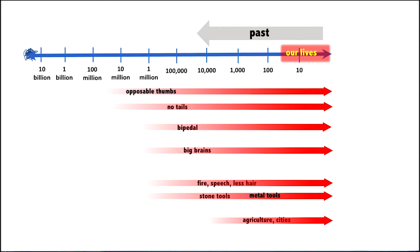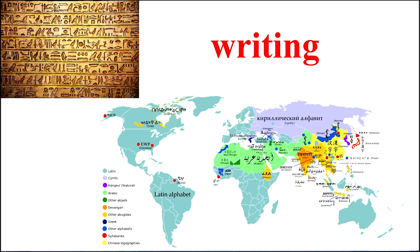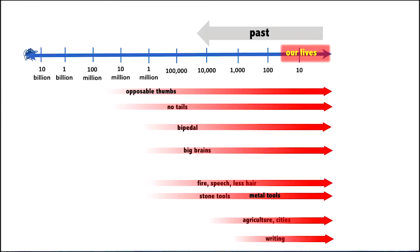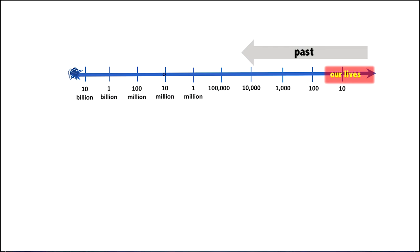Also writing, that's something that's really recent. Here's the distribution of alphabets around the world: the Latin alphabet, Arabic, Cyrillic spoken in Russia, Chinese writing, and about a couple dozen other writing systems. The earliest ones were about five thousand years ago.